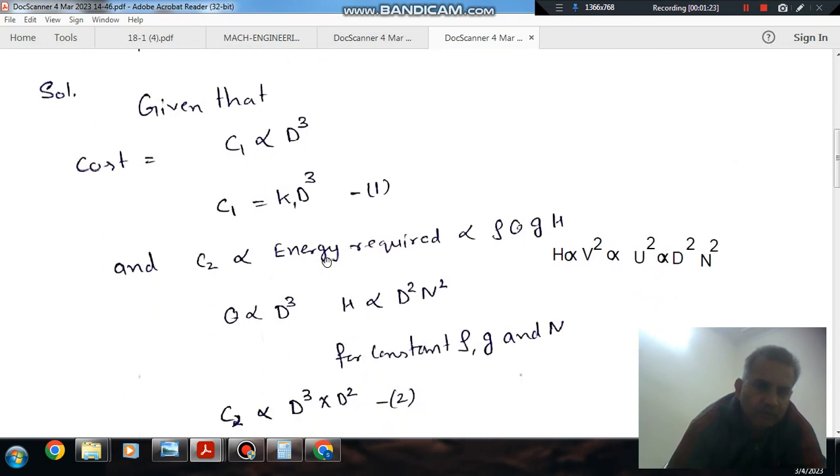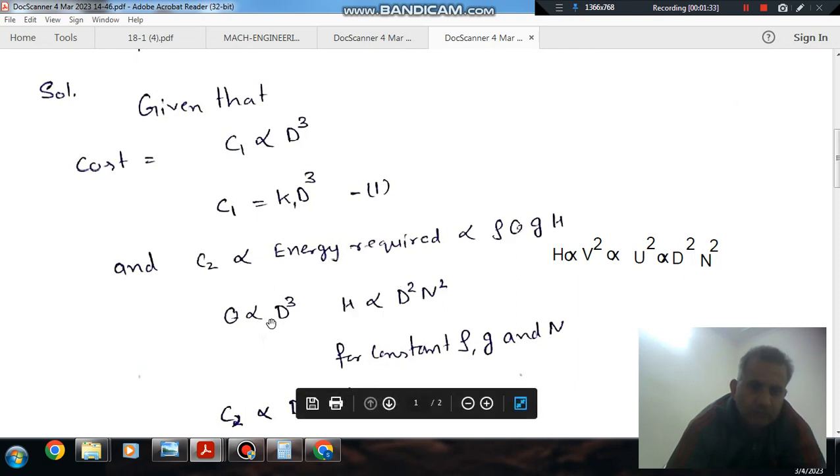And cost C2 is directly proportional to energy required. Energy required is ρgh, where ρ and g are constants and Q is directly proportional to D, because discharge is area times velocity and area is proportional to diameter squared and velocity is proportional to D.